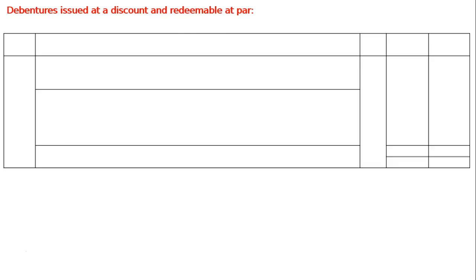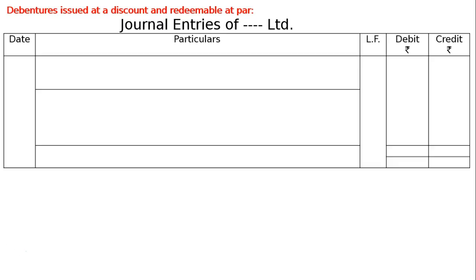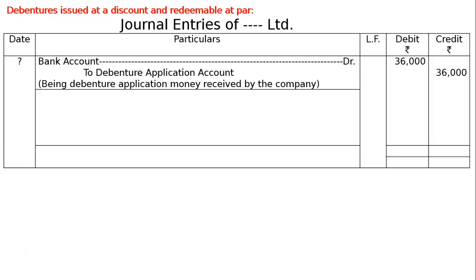Draw the journal entries of A dash dash Limited. The journal format is ready. The first entry is bank account debited, to debenture application account, being debenture application money received by the company for rupees 40,000 debentures issued at a discount.